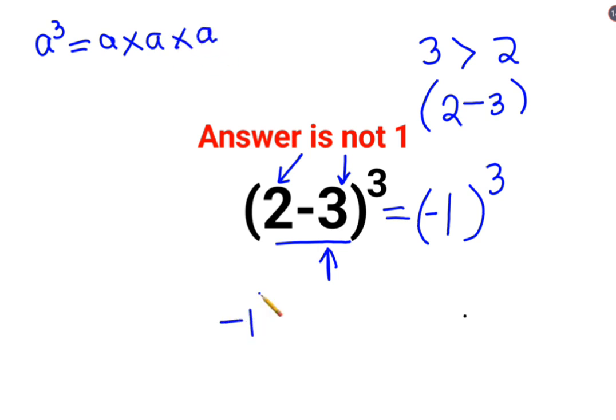So similarly, minus 1 raised to 3 when multiplied will be minus 1 multiplied by minus 1 multiplied by minus 1.